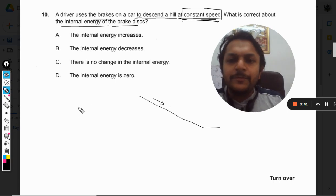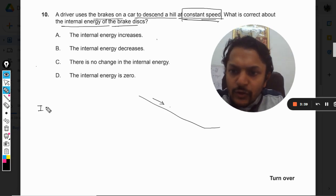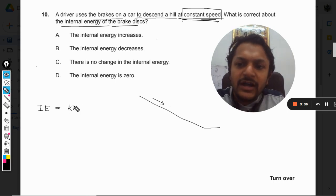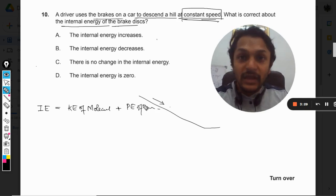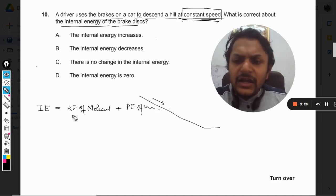So we know from the theory that the internal energy is the sum of kinetic energy of the molecules or atoms plus the potential energy of the molecules or atoms inside the material.